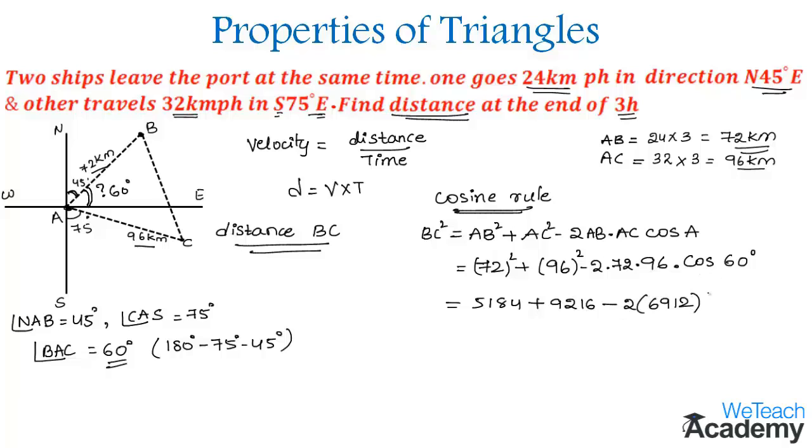So here 2 and 2 gets cancelled. So here by adding and subtracting we get 7488 as the value of BC².